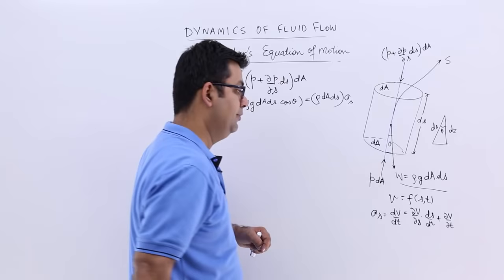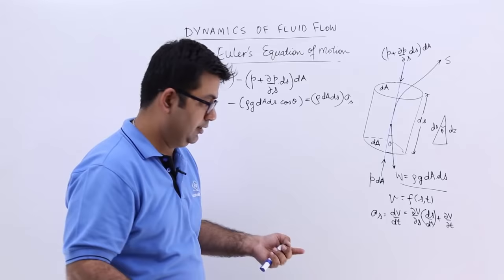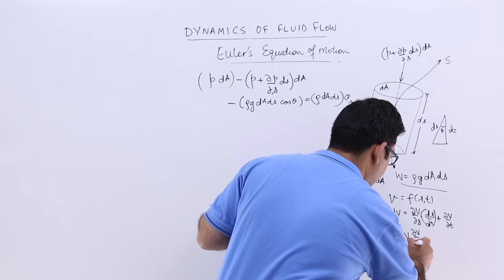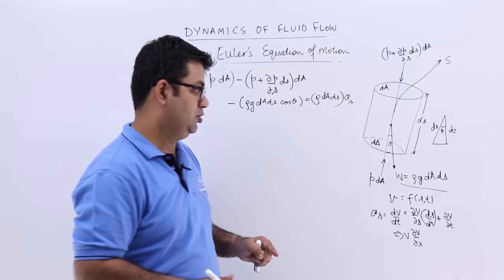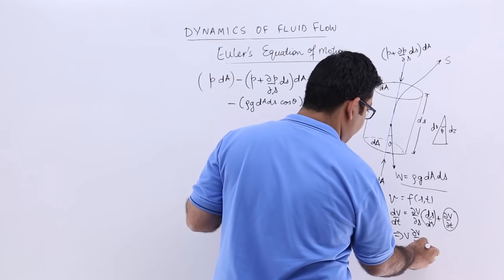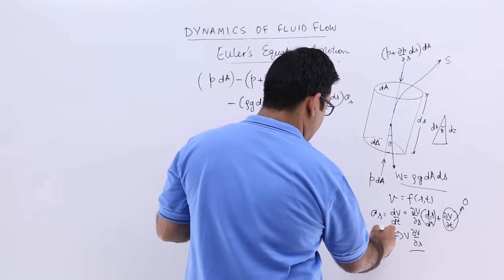Now ds upon dt is velocity again. So you will write it down as V into curly V upon curly s. And let us assume that the flow which is happening is steady flow. So the time variation of the velocity will become 0. So you will be only left with this. This is 0 because of steady flow conditions. So A_s is equal to V into curly V by curly s.